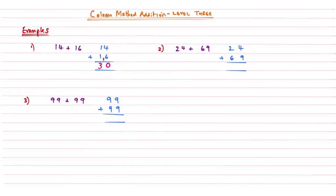So that's example 1. Looking at example number 2: the first column we've got 4 add 9 to add together, and that gives me an answer of 13. So we're going to write the 13 — that little 1 is above and to the left, so we write the 1 there and then write the 3 there. Then we move on to the second column: 2 add 6 gives me 8, add that 1 there, and so that gives me an answer of 93.